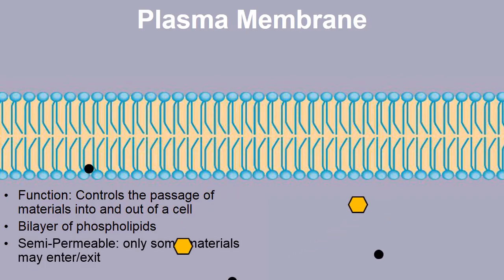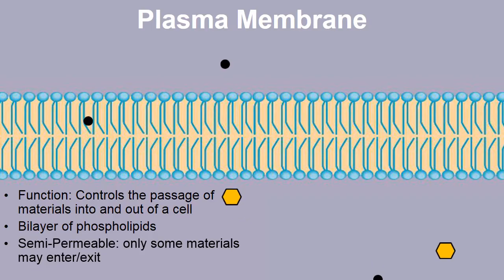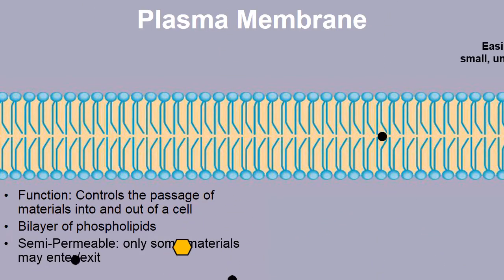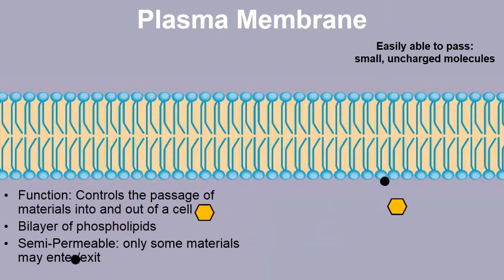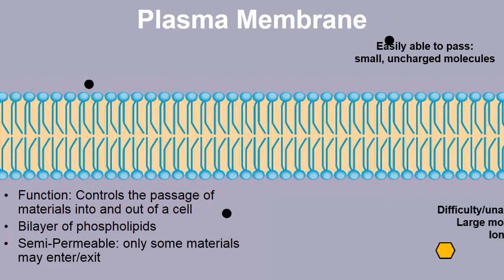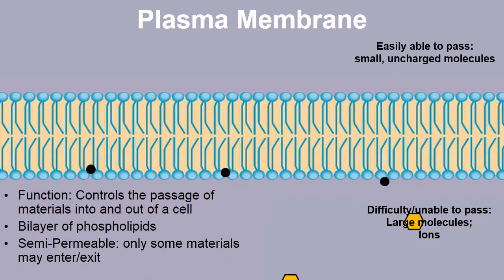An important feature of the plasma membrane is that it is semi-permeable, or selectively permeable, meaning that only some materials may pass through the plasma membrane, not everything. Notice how the black circles are freely able to pass, but the larger orange hexagons are not. Molecules that are easily able to pass tend to be small molecules that don't have a charge to them — carbon dioxide and oxygen are two great examples. Molecules that are unable to pass tend to be large molecules or molecules that have a charge, called ions.